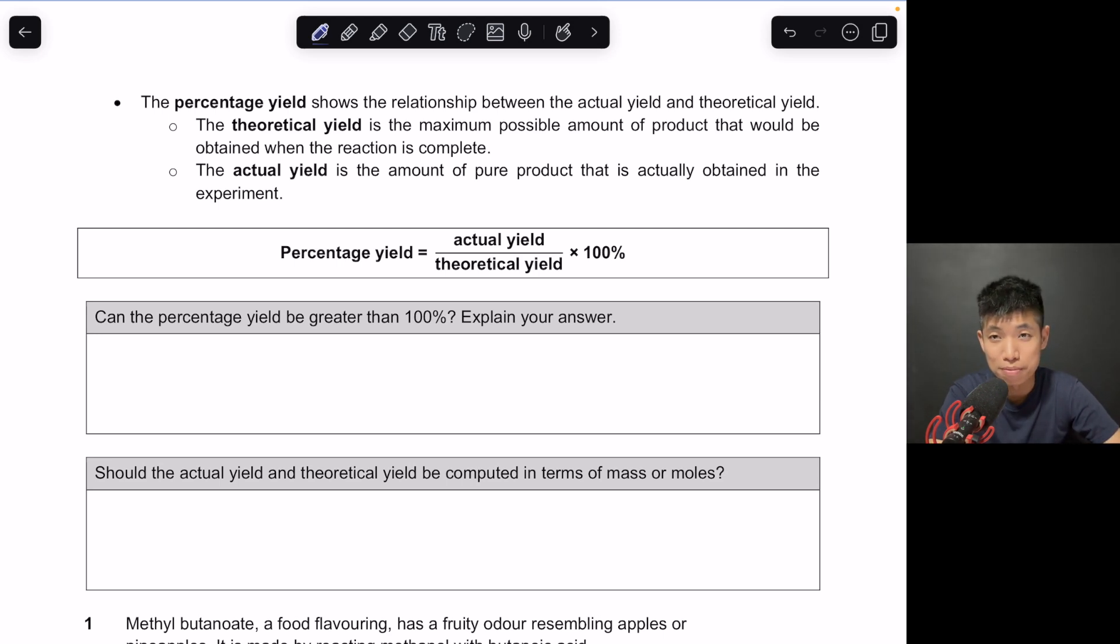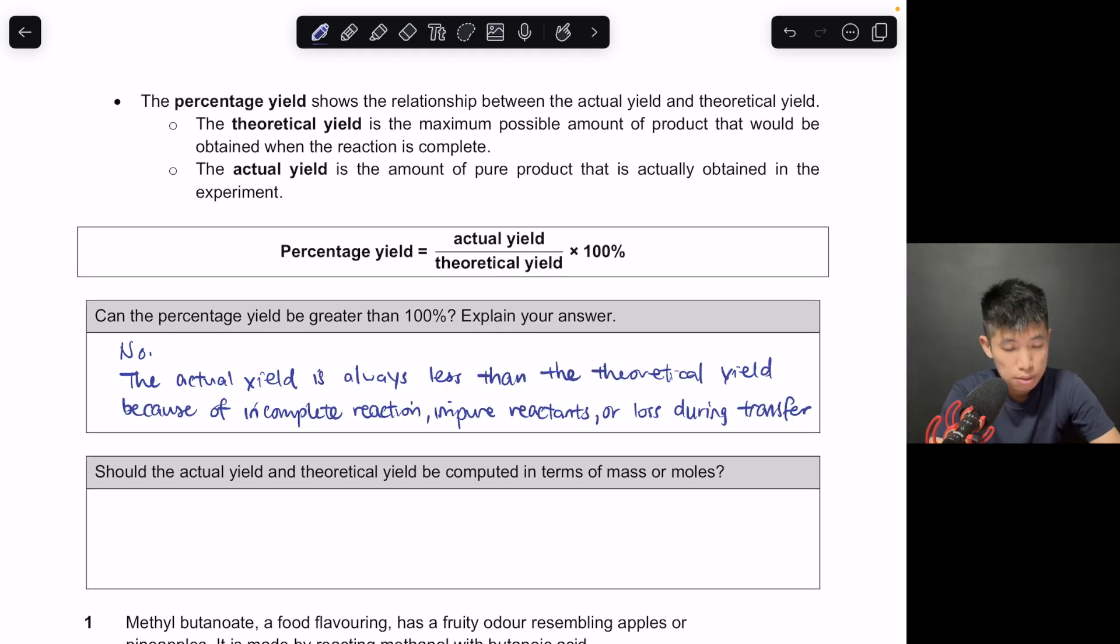So the percentage yield can never be greater than 100%. You can already guess that. So if you buy a box for 12 muffins, you can't get 14 or 15 muffins unless you add in more flour or any more eggs. So you need to put in more starting materials. If the actual yield is greater than 100%, that could mean that there might be some impurities that went in such that you get more weight. But that weight itself is actually impurities. So over here, the answer is no.